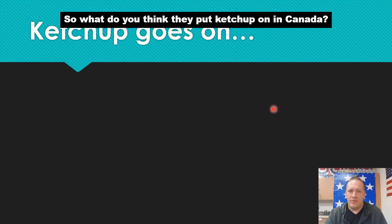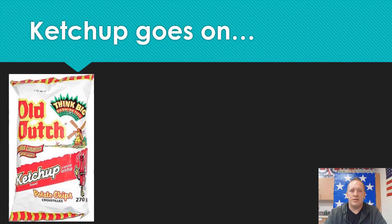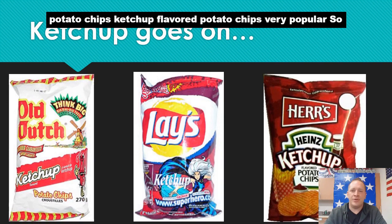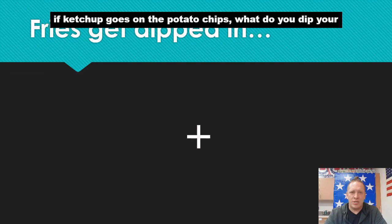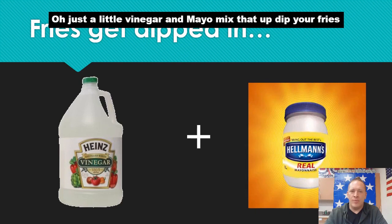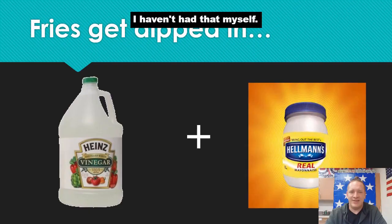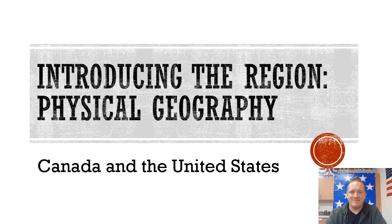What do you think they put ketchup on in Canada? Ketchup flavored potato chips — very popular. So if ketchup goes on the potato chips, what do you dip your French fries in? Just a little vinegar and mayo, mix that up, dip your fries in. I haven't had that myself.